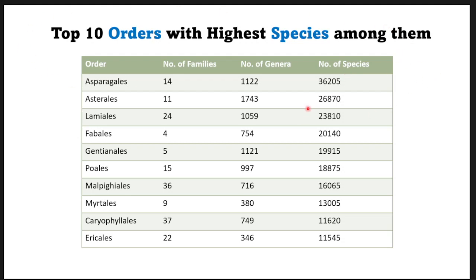Together these top ten orders alone account for around 198,000 species — meaning that among the 64 orders in the APG system, two-thirds of all species reside in just the top ten orders. This system of classification provides a proper monophyletic and phylogenetic understanding of plants and their evolution, thereby clarifying relationships between species. Overall, it is the most modern and widely accepted classification at the present time. Thank you for watching.